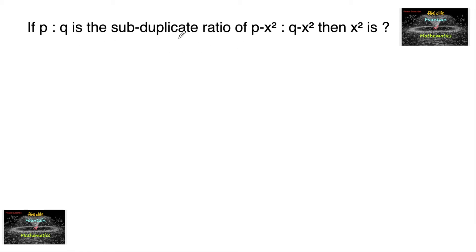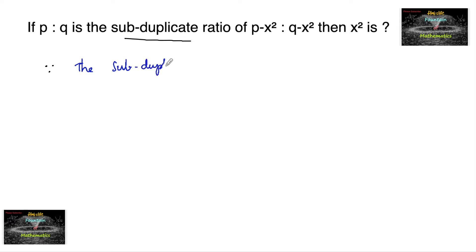If p is to q is the subduplicate ratio of (p minus x square) is to (q minus x square), find the value of x square. Since the subduplicate ratio of a is to b is root a is to root b, and here it is given in the problem.